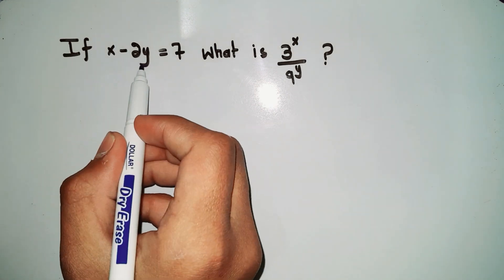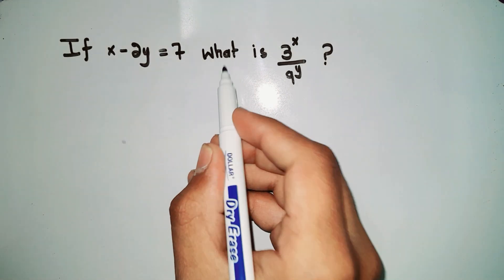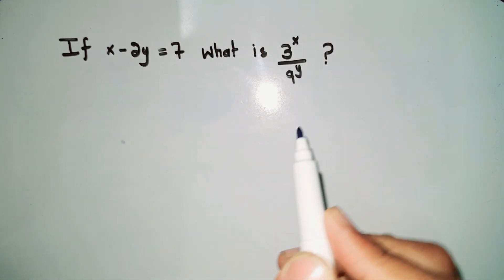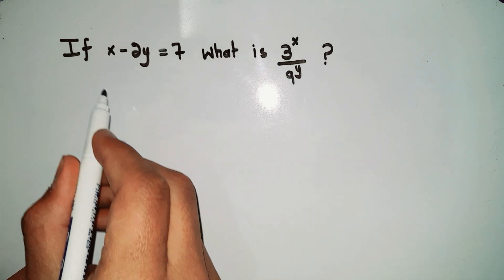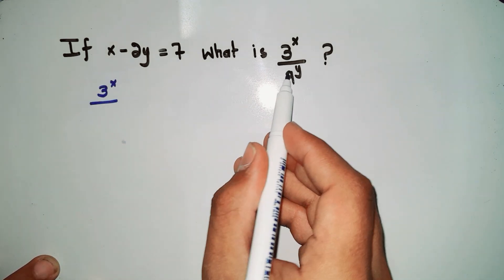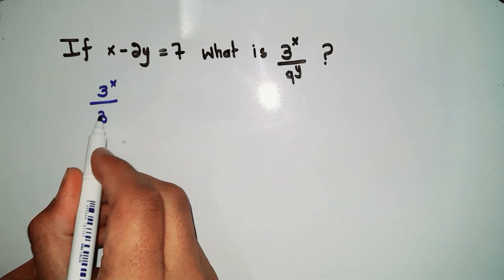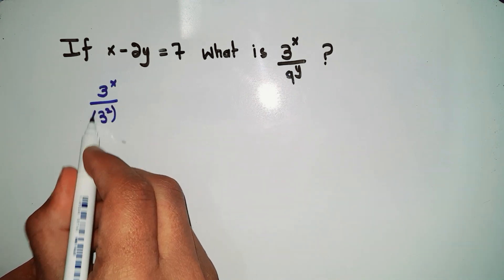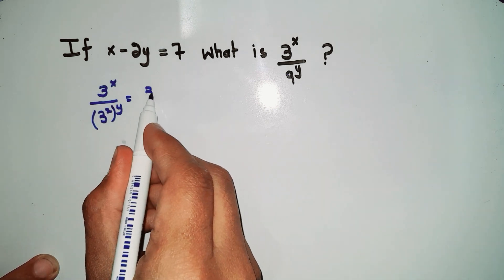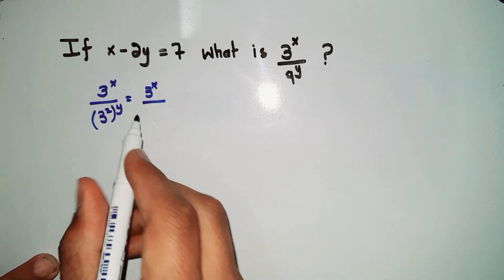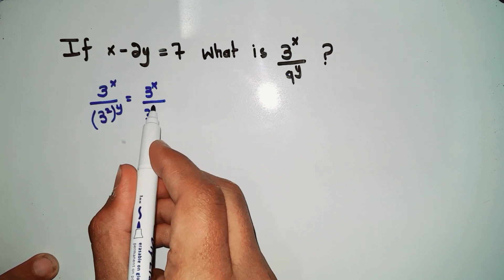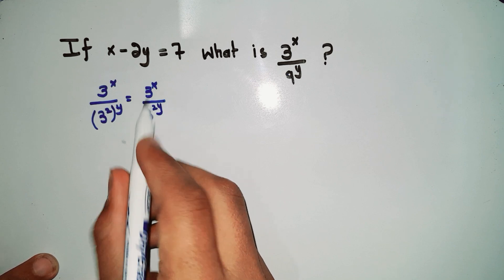If x minus 2y equals 7, what is 3^x divided by 9^y? First, we write 3^x divided by 9^y, and since 9 is 3 squared, we rewrite 9^y as 3^(2y). This gives us 3^x divided by 3^(2y), and multiplying the powers gives us 3^(2y) in the denominator.